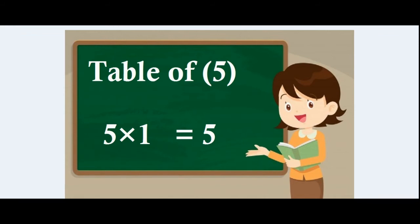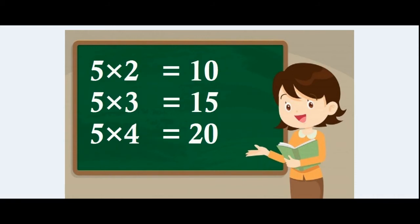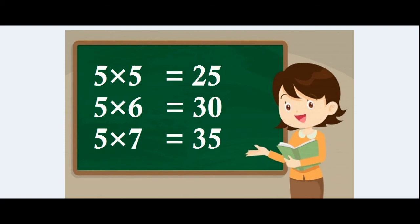5 x 1 = 5. 5 x 2 = 10. 5 x 3 = 15. 5 x 4 = 20. 5 x 5 = 25. 5 x 6 = 50. 5 x 7 = 35.